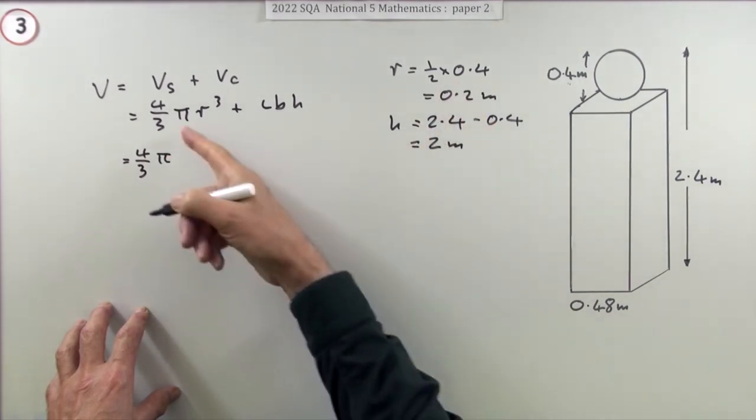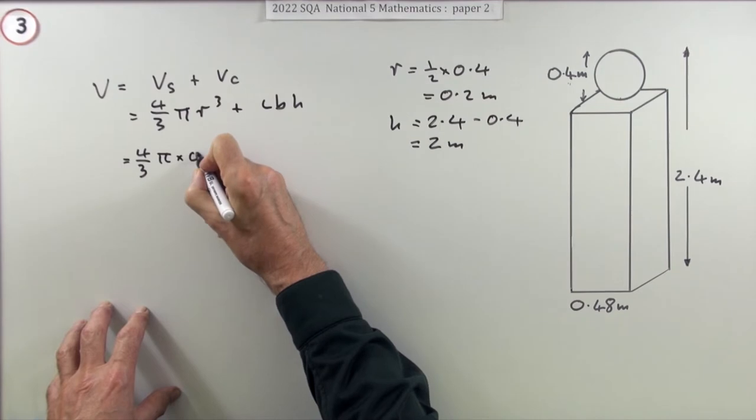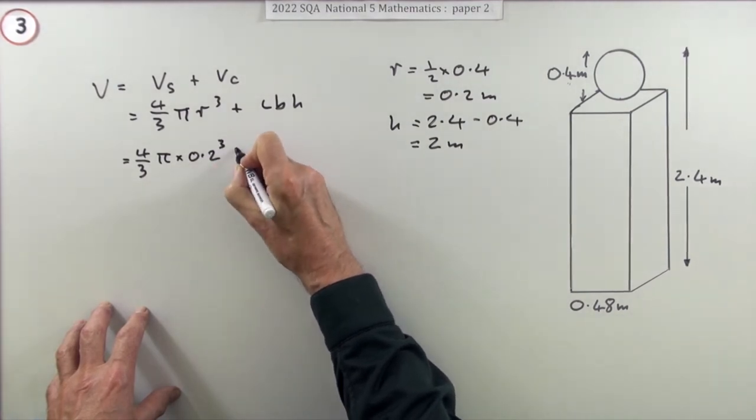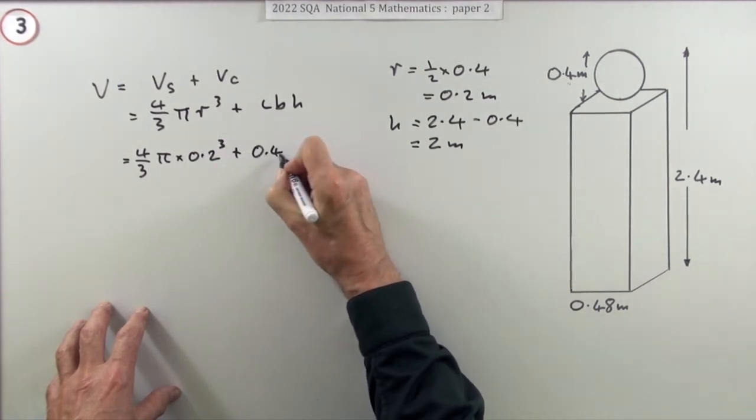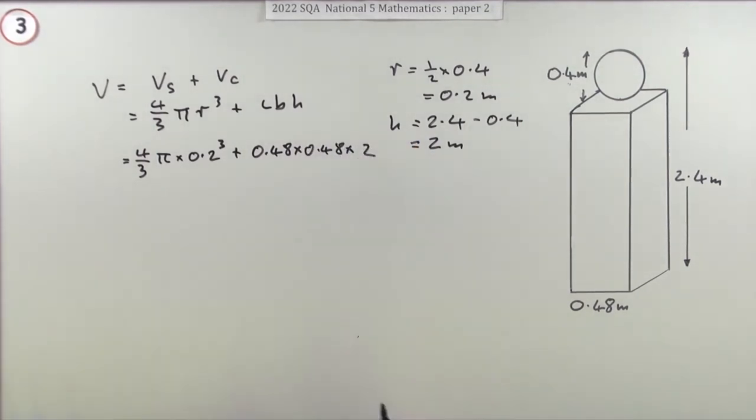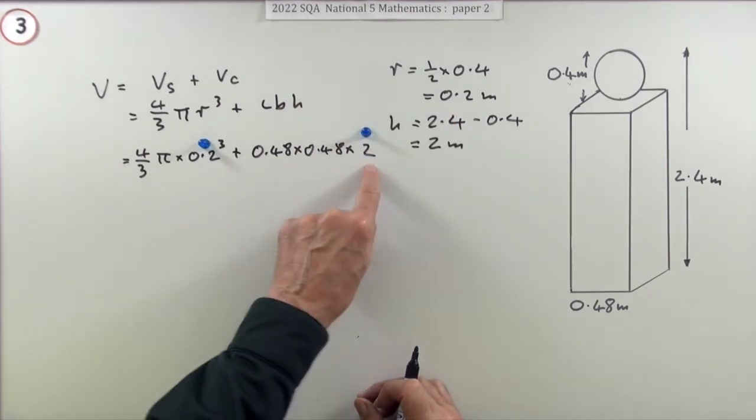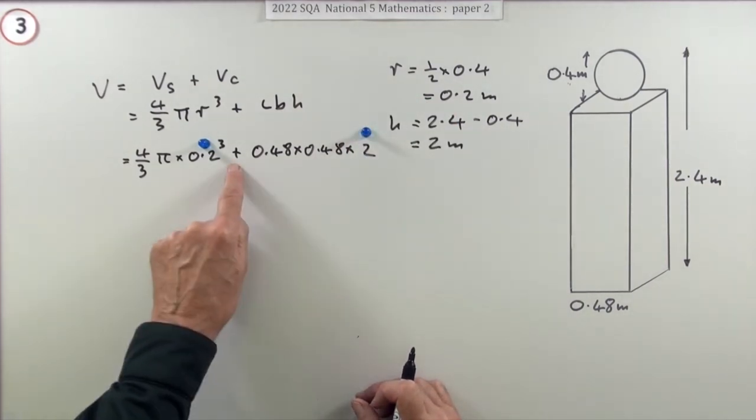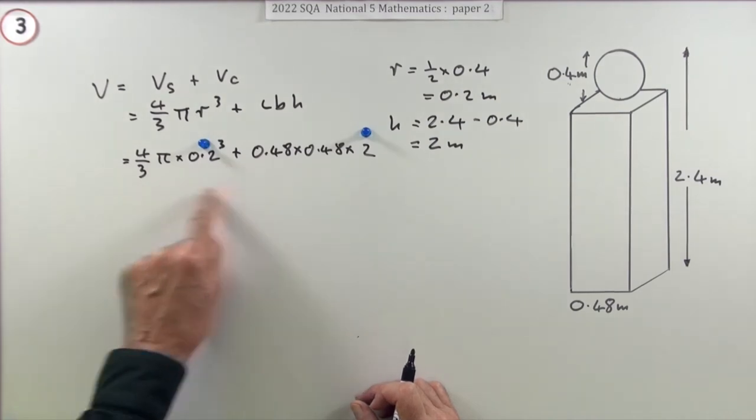Pop them in: 4/3 π times 0.2³ plus 0.48 times 0.48 times 2. That would be two of the marks because now you've put 0.2 into the formula for the sphere, you've put 2 into the formula for the cuboid, and you've shown you've added them together.